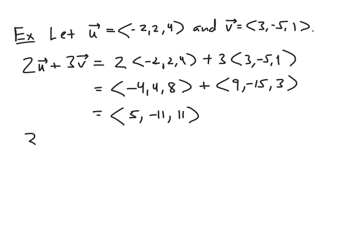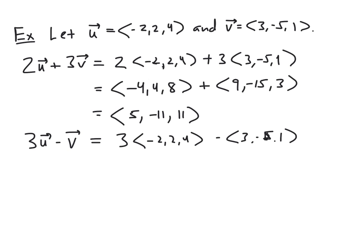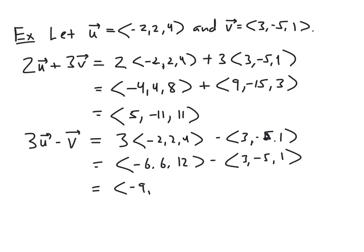If we wanted to do a subtraction, for example 3u minus v: that's 3 times the vector negative 2, 2, 4 minus the vector 3, negative 5, 1. We get negative 6, 6, 12 minus 3, negative 5, 1. Subtracting component-wise: negative 6 minus 3 is negative 9; 6 minus negative 5 is positive 11; and 12 minus 1 is also positive 11. So we get the vector negative 9, 11, 11.